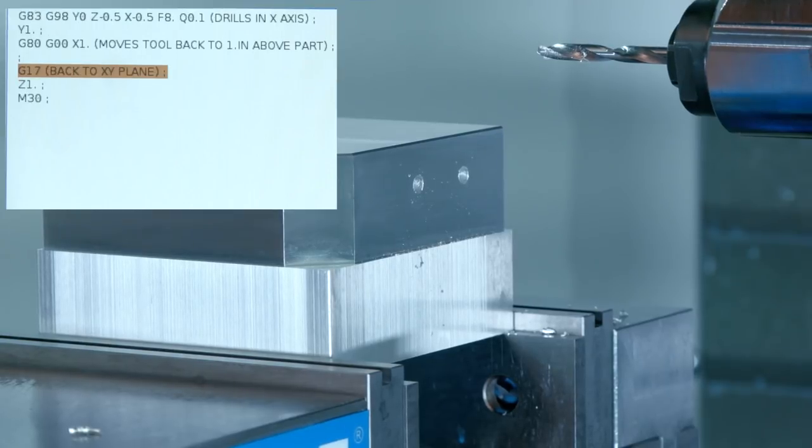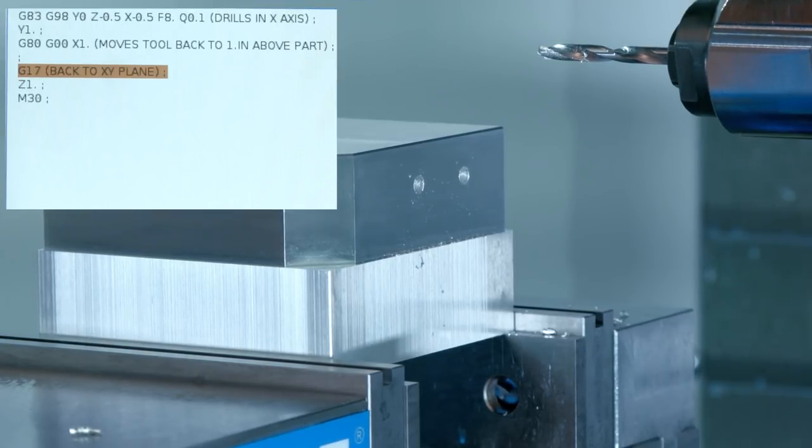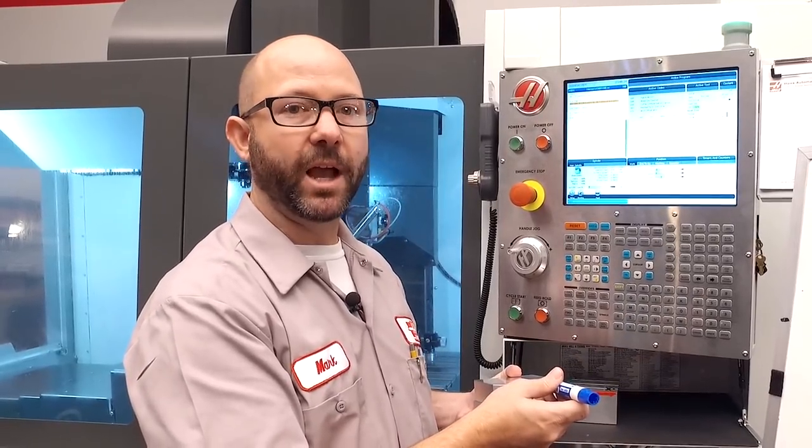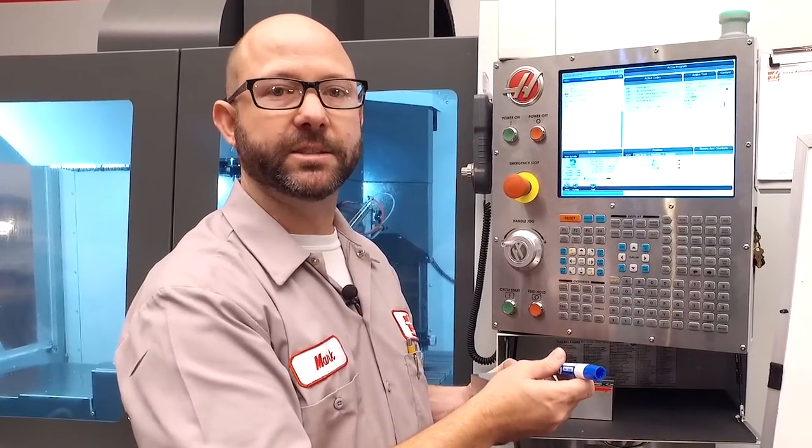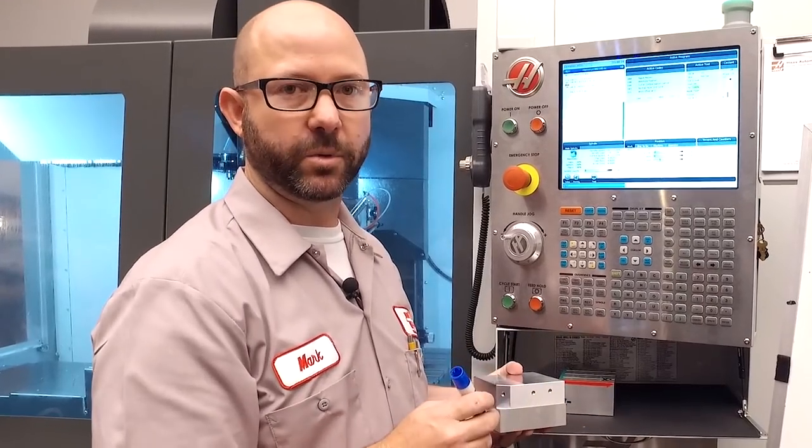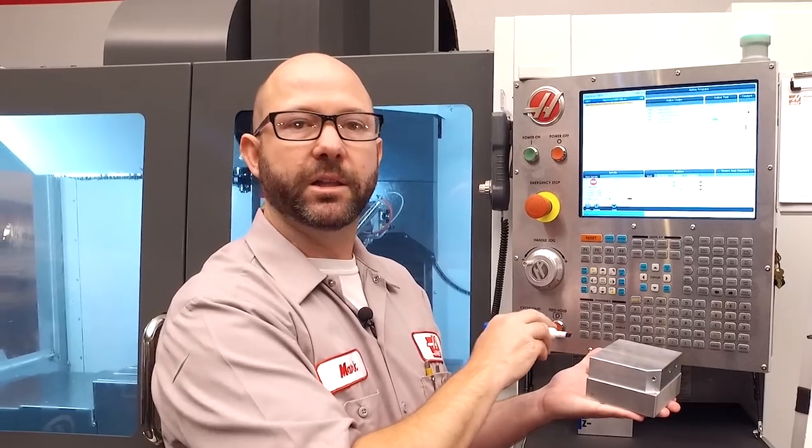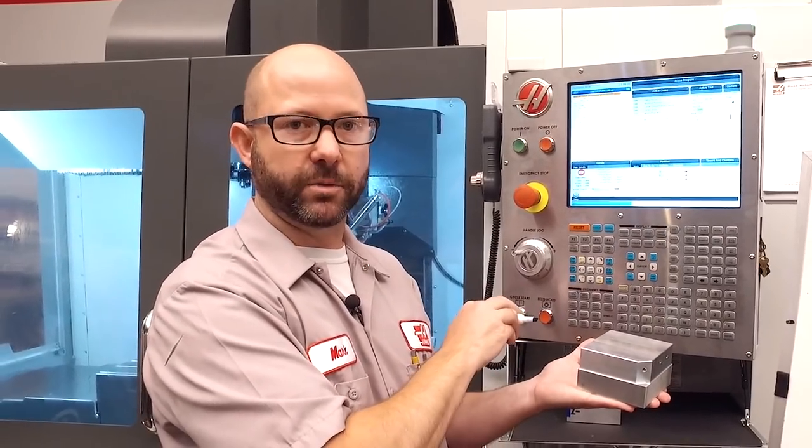To finish up, we put the machine back into G17 so we can go back to normal milling. Because we're using a right-angled head from the right side, all of our clearance plane and safety planes are going to be in the X positive direction. If we were cutting from the left side of the part, all of our clearance planes would be in the X minus direction.